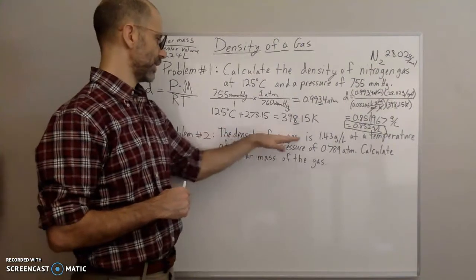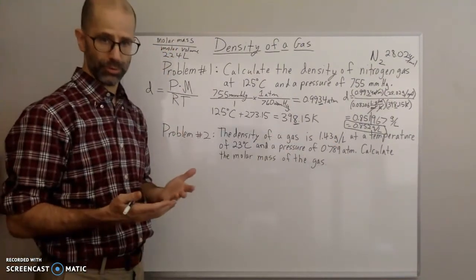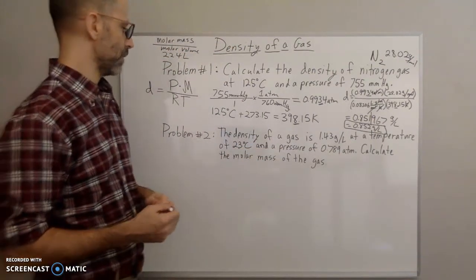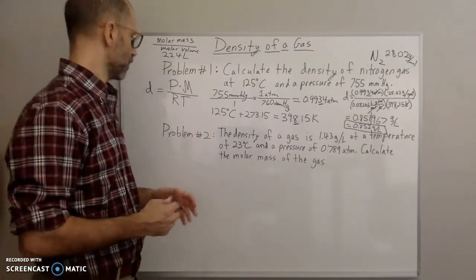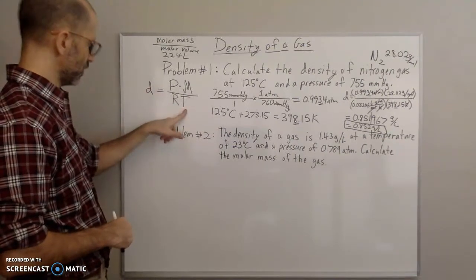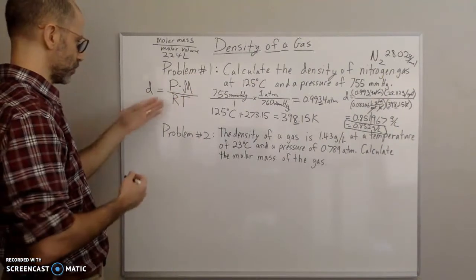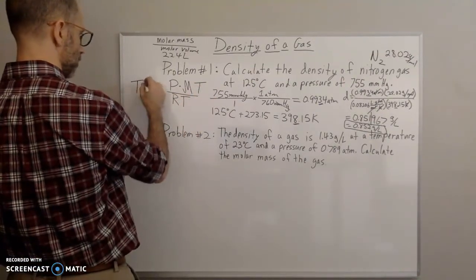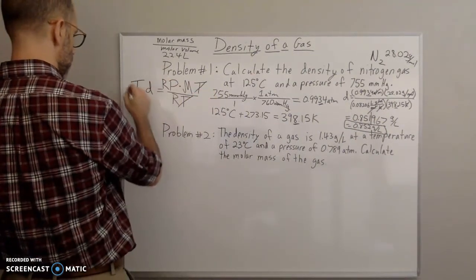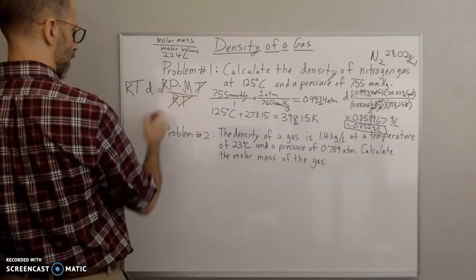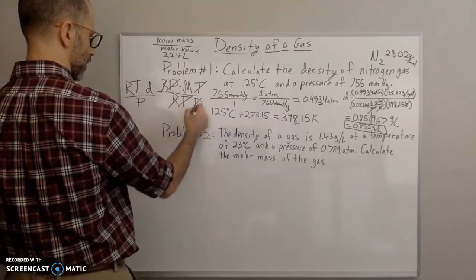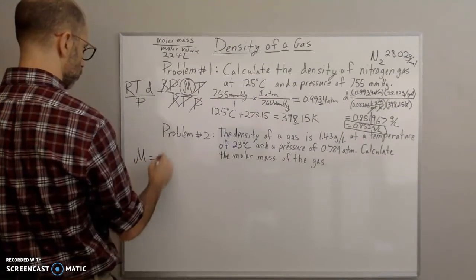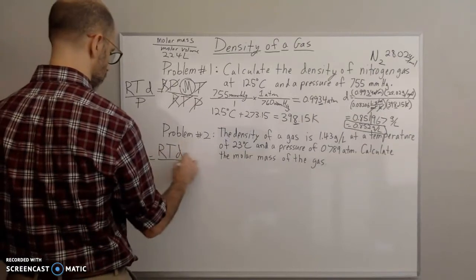Problem number two: the density of the gas is 1.43 grams per liter, given at a temperature of 23 degrees Celsius and a pressure of 0.789 atmospheres. Calculate the molar mass of the gas. Now we have to manipulate our equation — they're giving us density, R, temperature, and pressure, and we need to find molar mass. If I multiply both sides by T, multiply both sides by R, and divide by pressure, I'm left with molar mass. So molar mass equals RTD over P.